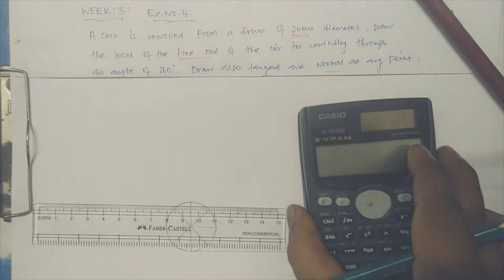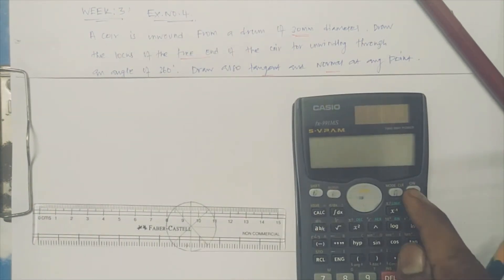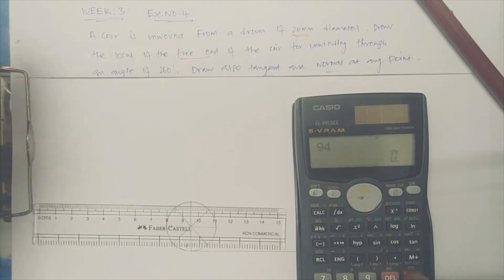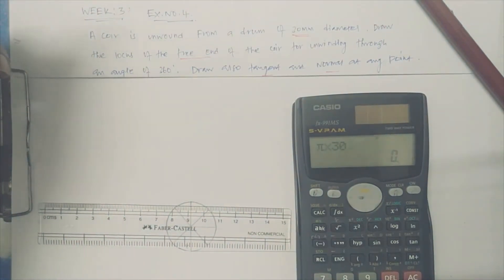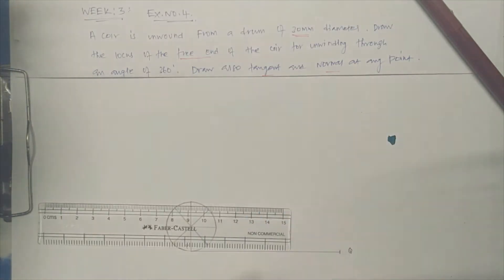It's not going to give you that much changes because the circle is very small. It's very difficult to draw within this A4 size sheet. Hence this is 94 pi d, pi into 30 is 94.2.